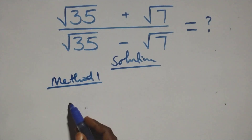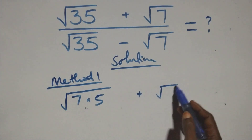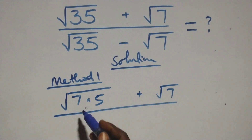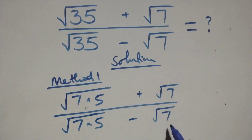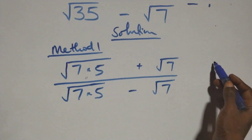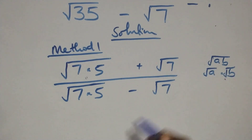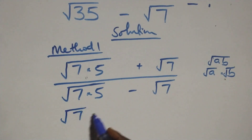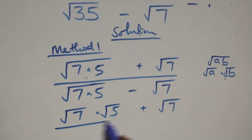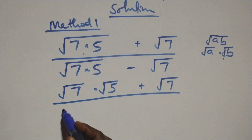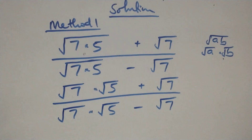We rewrite all we have. Root 35 can be written as root of 7 times 5, plus root 7 over root 7 times 5 minus root 7. This follows because when we have root of a times b, we can separate it as root a times root b. So here we have root 7 times root 5 plus root 7, over root 7 times root 5 minus root 7.